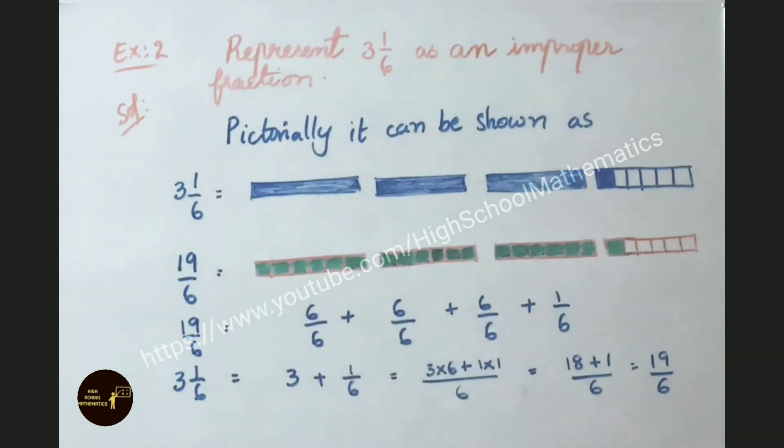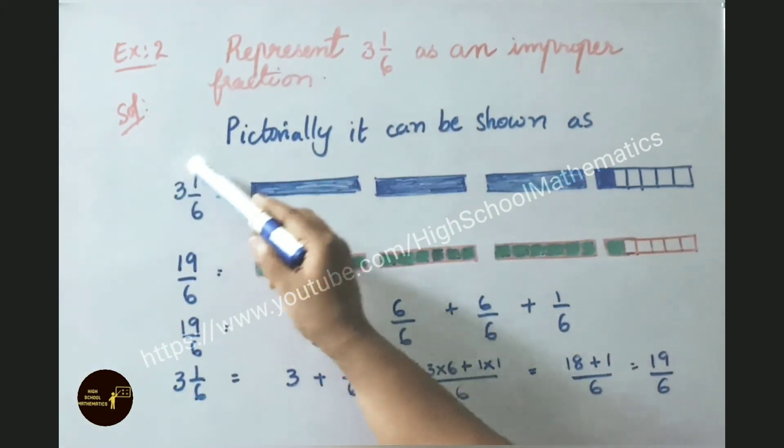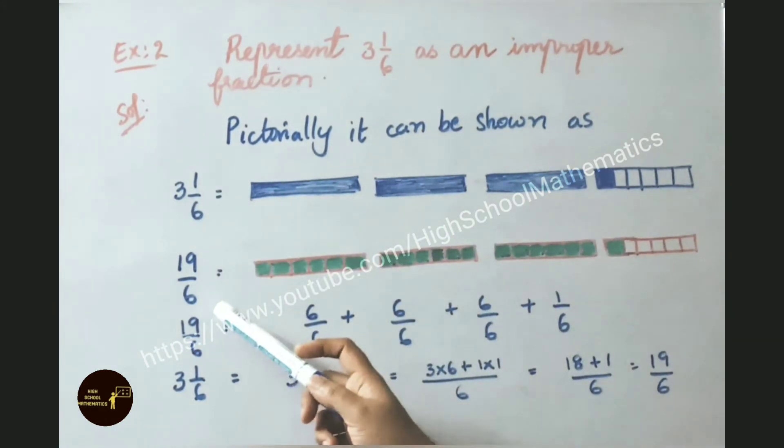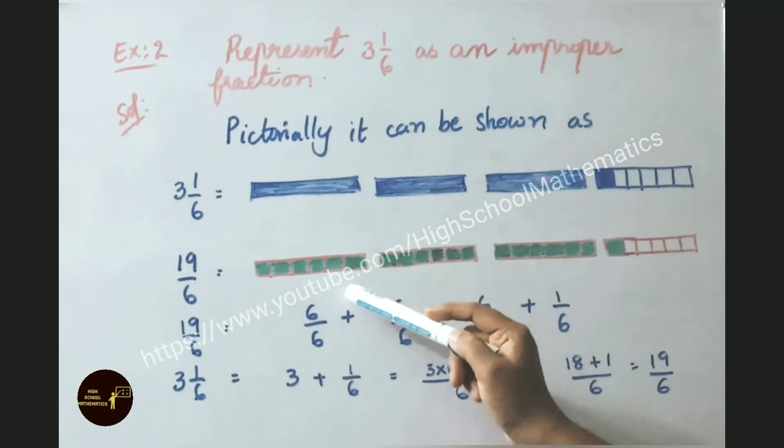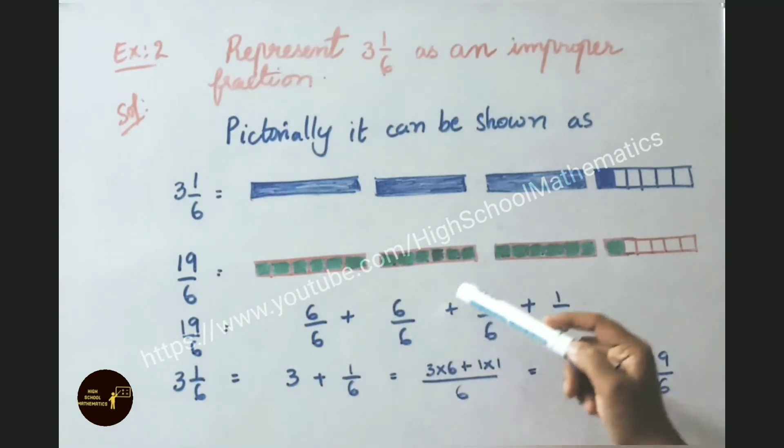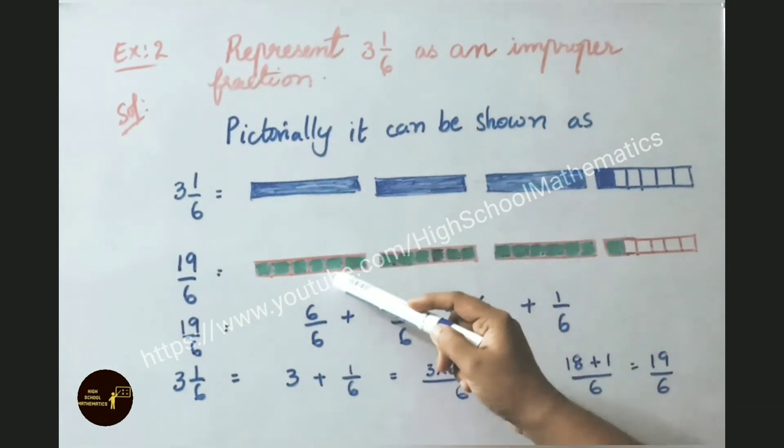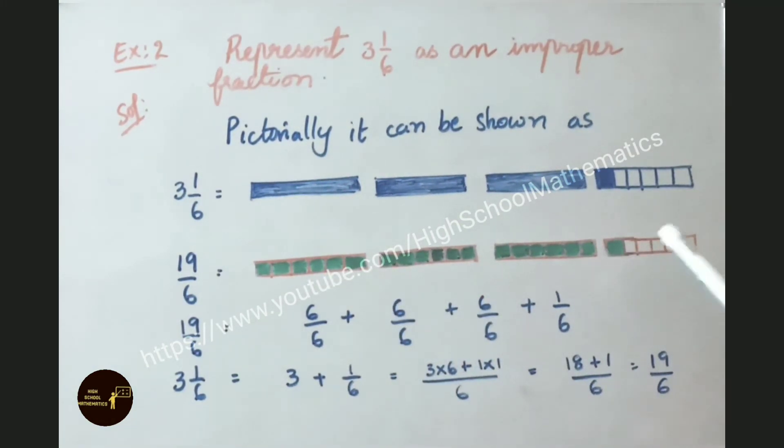3 and 1 by 6 can be written as 19 by 6. See here: 6 threes are 18, 18 plus 1 is 19. Now let us see 19 by 6. Here each part we have divided into 6 parts. So each box here, 6 all those we have shaded. And last one only one we have shaded. Count here: 6 plus 6 is 12, 12 plus 6 is 18, 18 plus 1 is 19. So 19 by 6 we have shaded here.